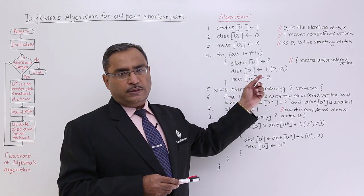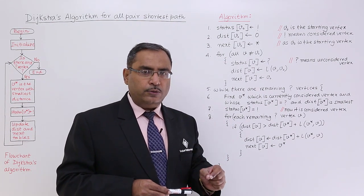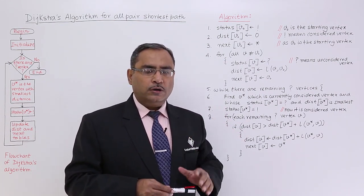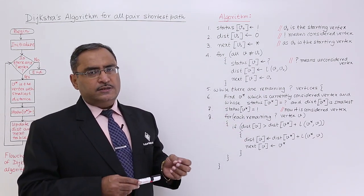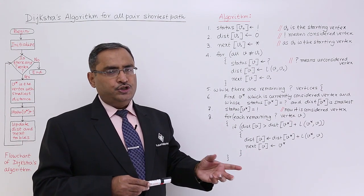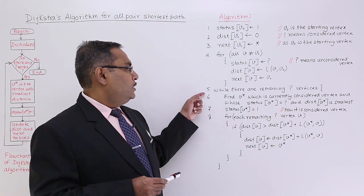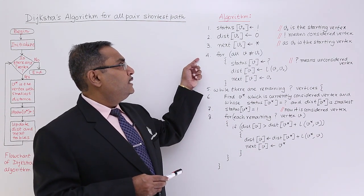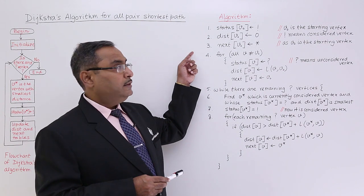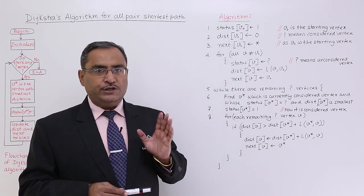Next V is equal to V0, that means it is denoting that from the V0 the distances have got measured. So either the distance will become any non-zero integer value denoting the weightage or otherwise it will become infinity. So now we have completed this step 1, 2, 3, 4 and this full step will be known as the initialization.